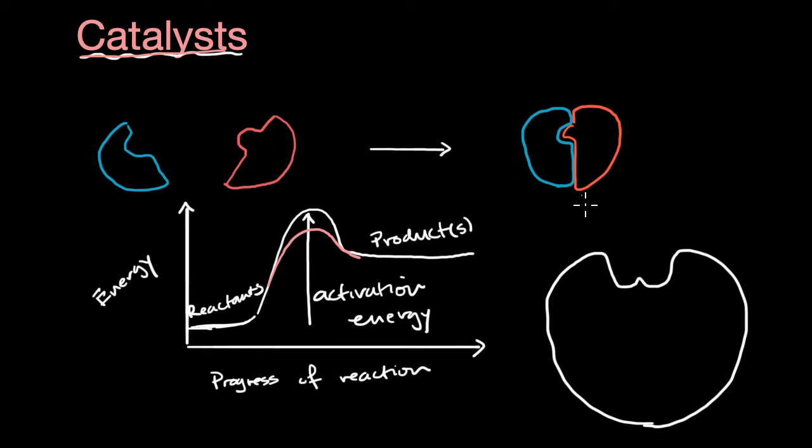And it just happened to be that this part of the enzyme, it's able to bond to that first reactant. Let me do that same color. So that first reactant and puts it into the right orientation where this other part of the enzyme can bond with that second reactant and puts it in the right orientation so that you don't need quite as much energy for them to be able to react with each other.